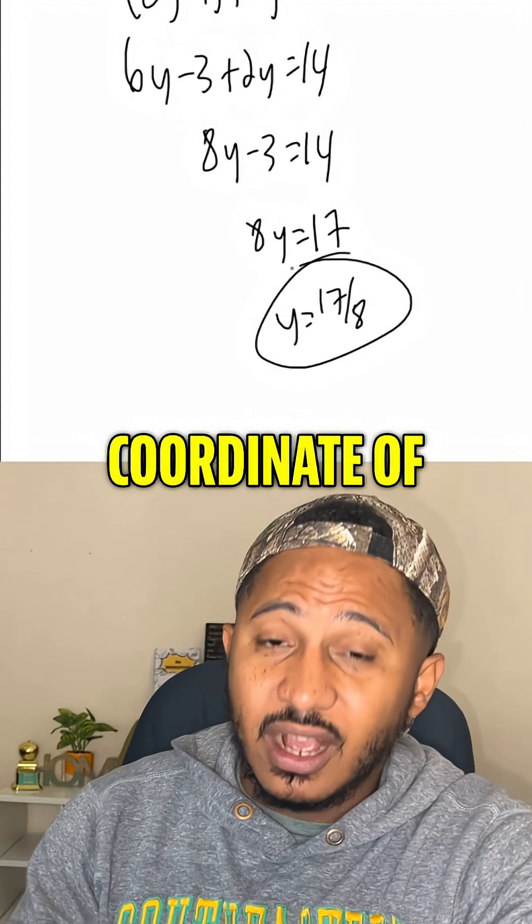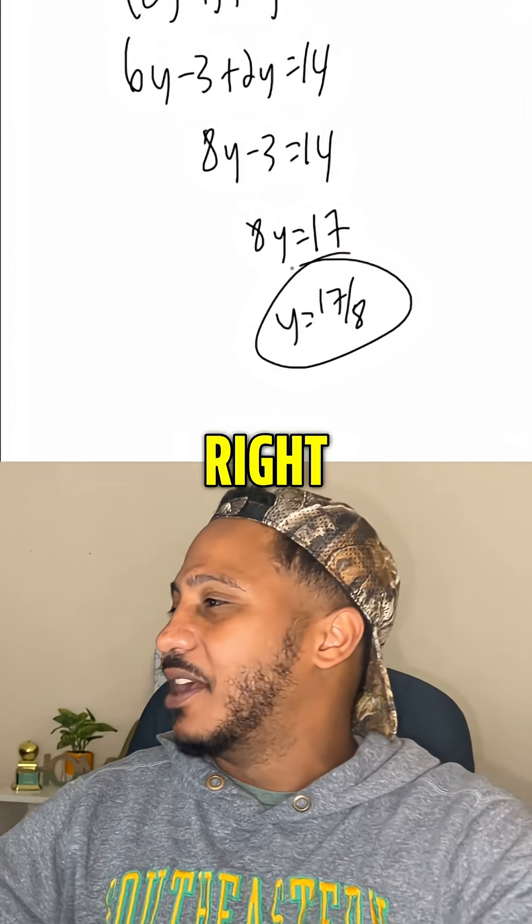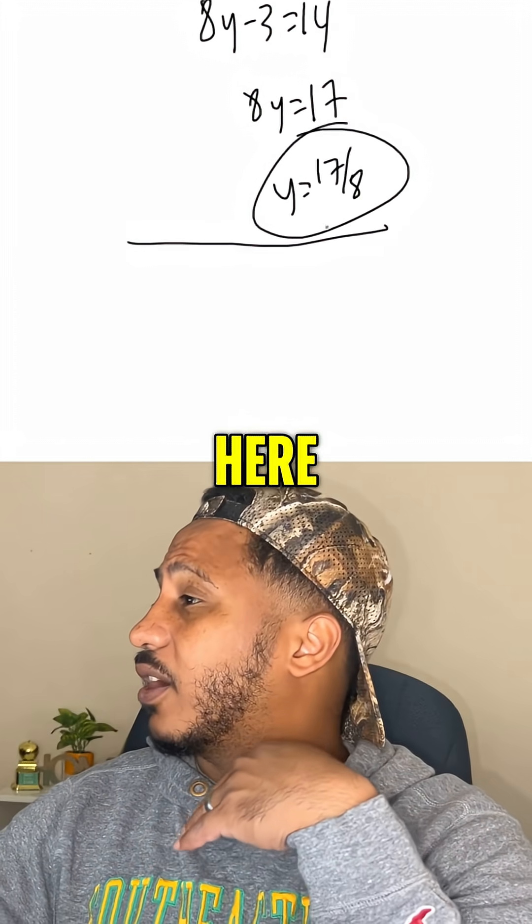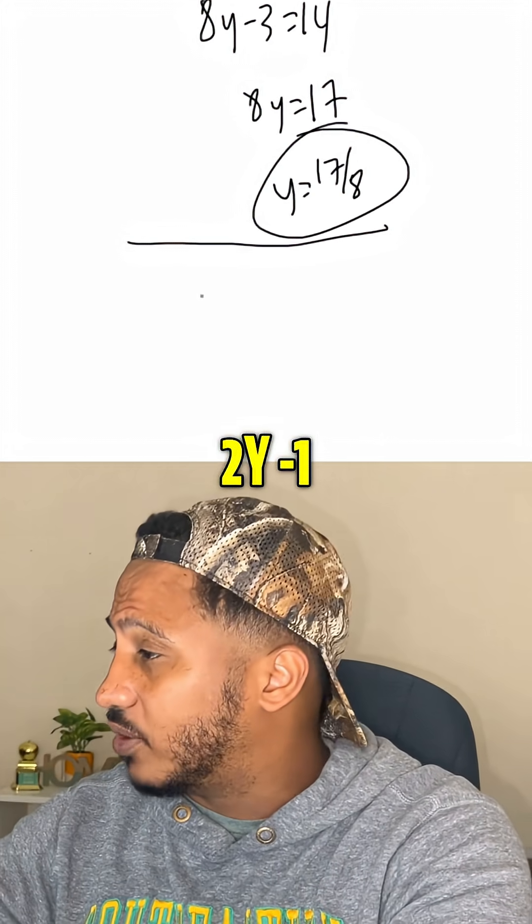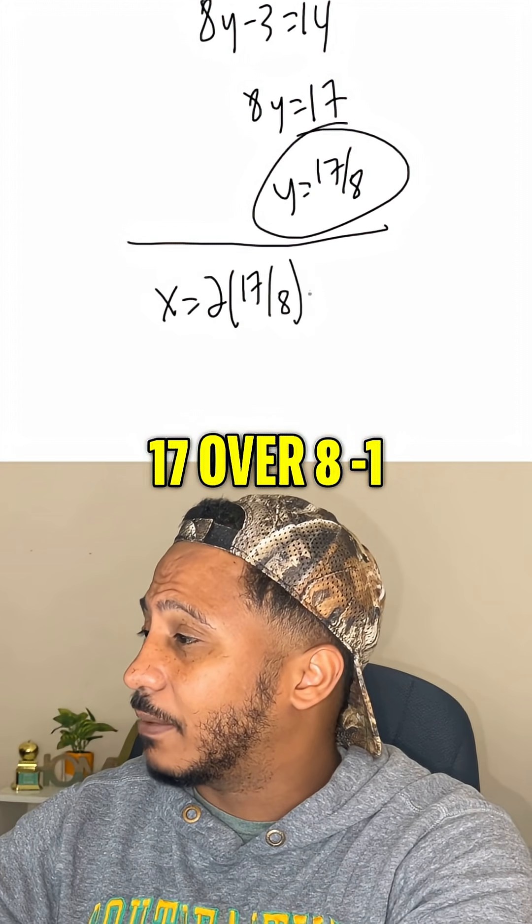So that would be the y-coordinate of our solution. To find the x-coordinate, we plug that back into either equation that has an x or a y in it. We know x equals 2y minus 1, so that would be x equals 2 times 17 over 8 minus 1.